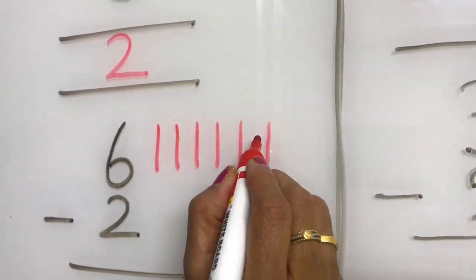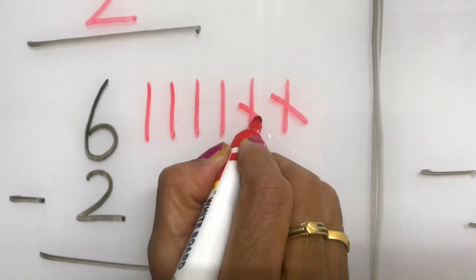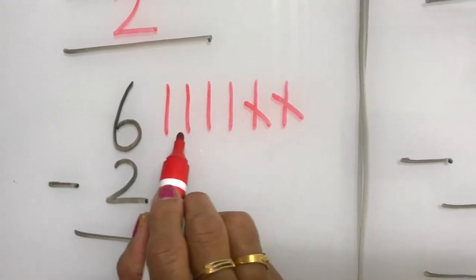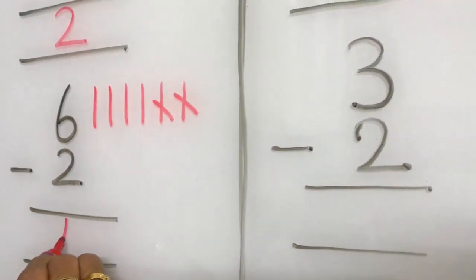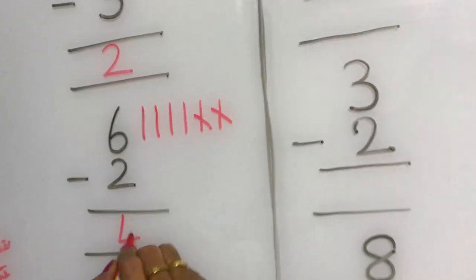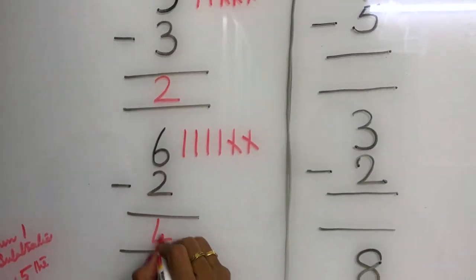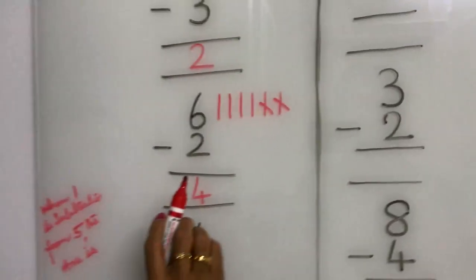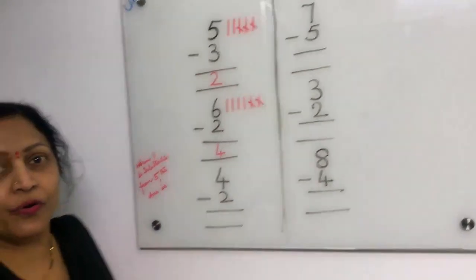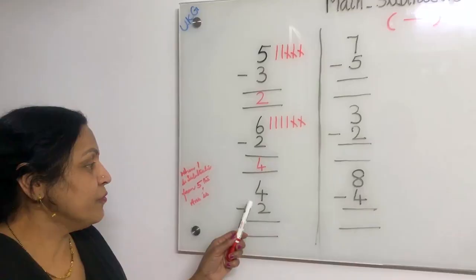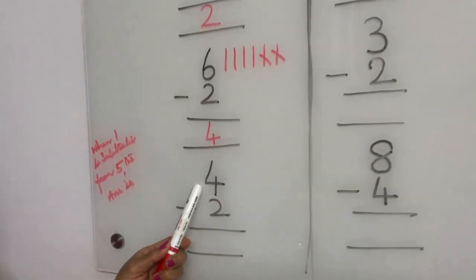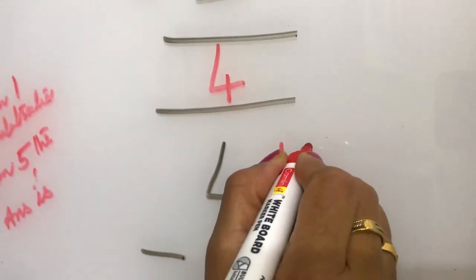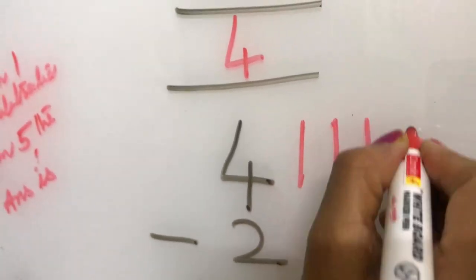We take out two lines. How many remaining lines are there? One, two, three, four — four is the answer. When two is subtracted from six, the answer is four. Now what is this number? Number four. We have to put four lines: one, two, three, four.